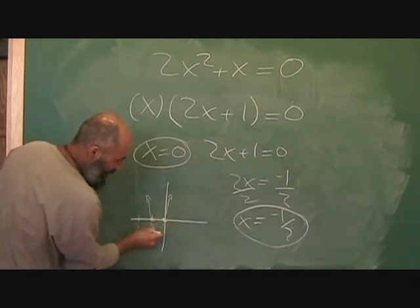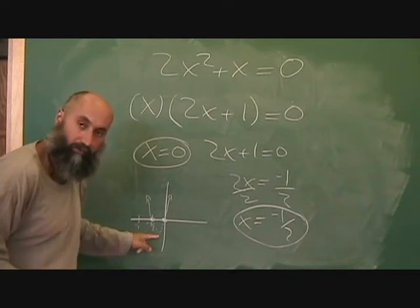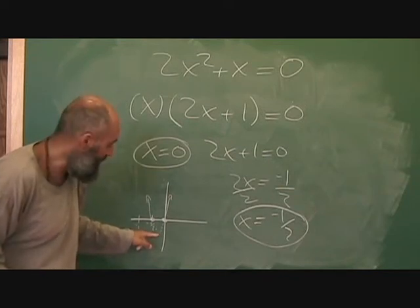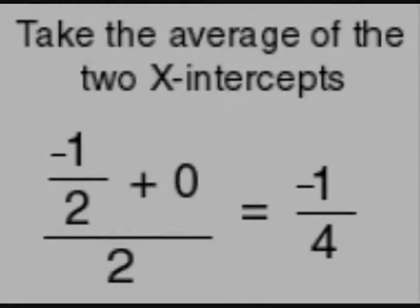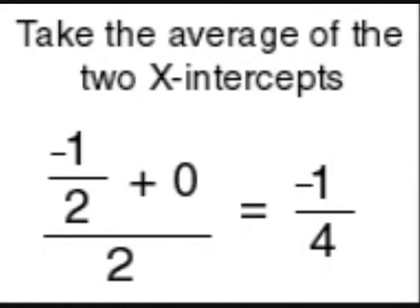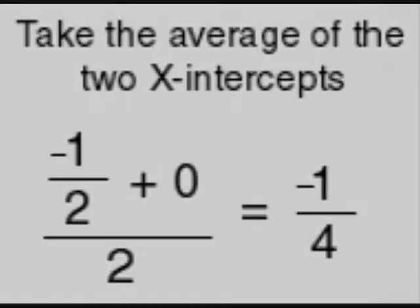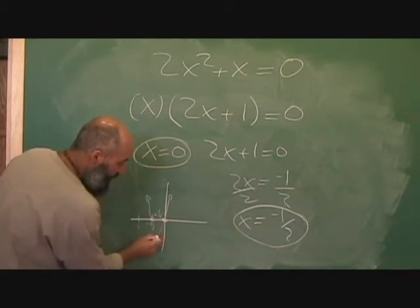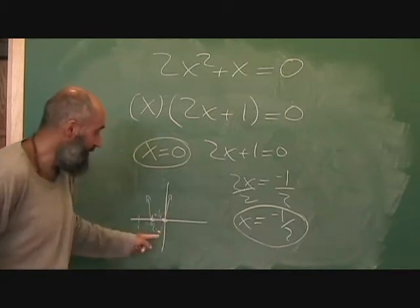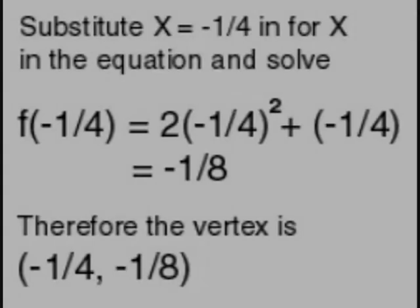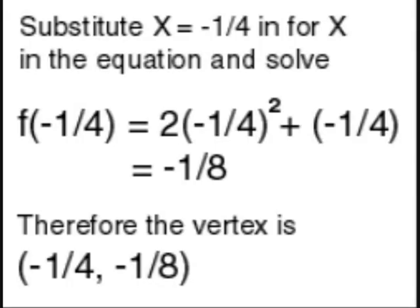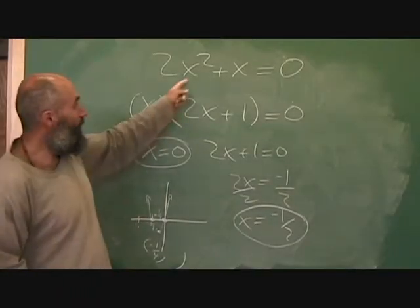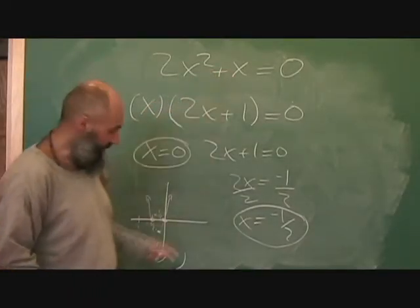We know this parabola opens up because the number here is positive. We don't know how far down it goes. To find that, you take the average of the two x-values: negative one over two plus zero divided by two gives you negative a quarter. To find the vertex, you already have the x-value — negative a quarter — and for the y-value you just plug negative a quarter into the equation.